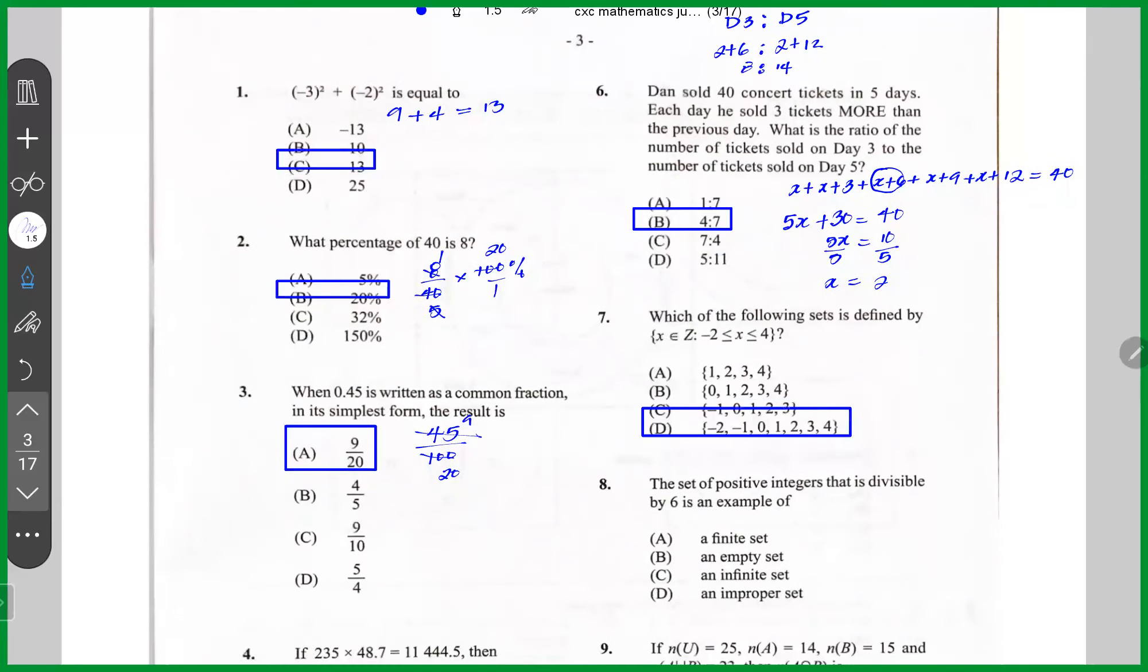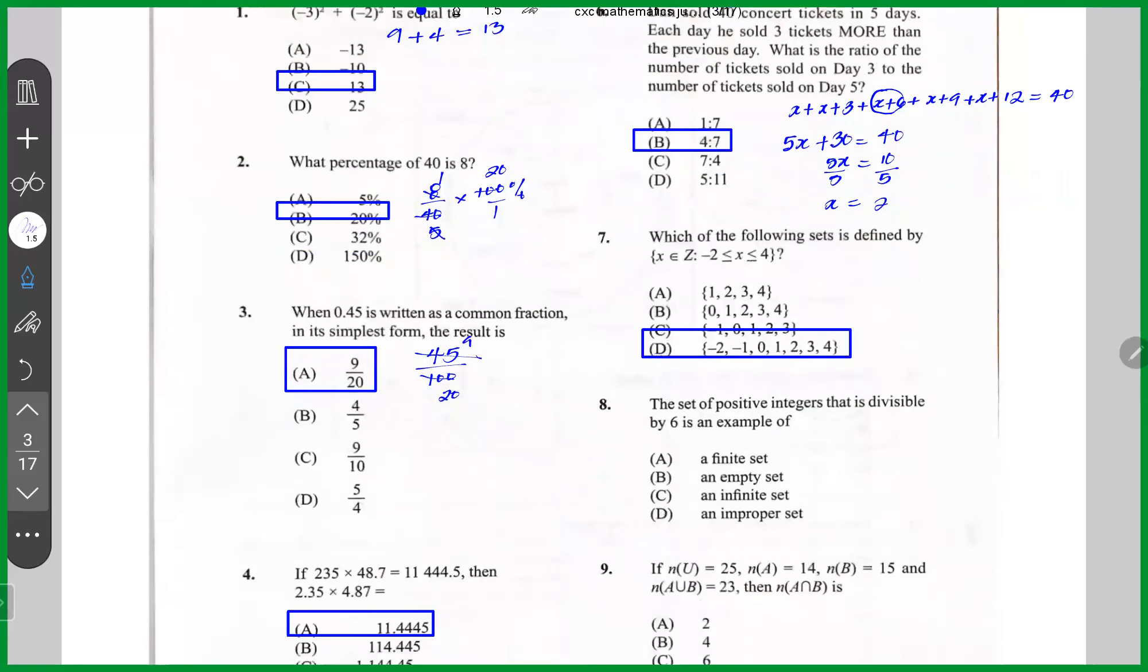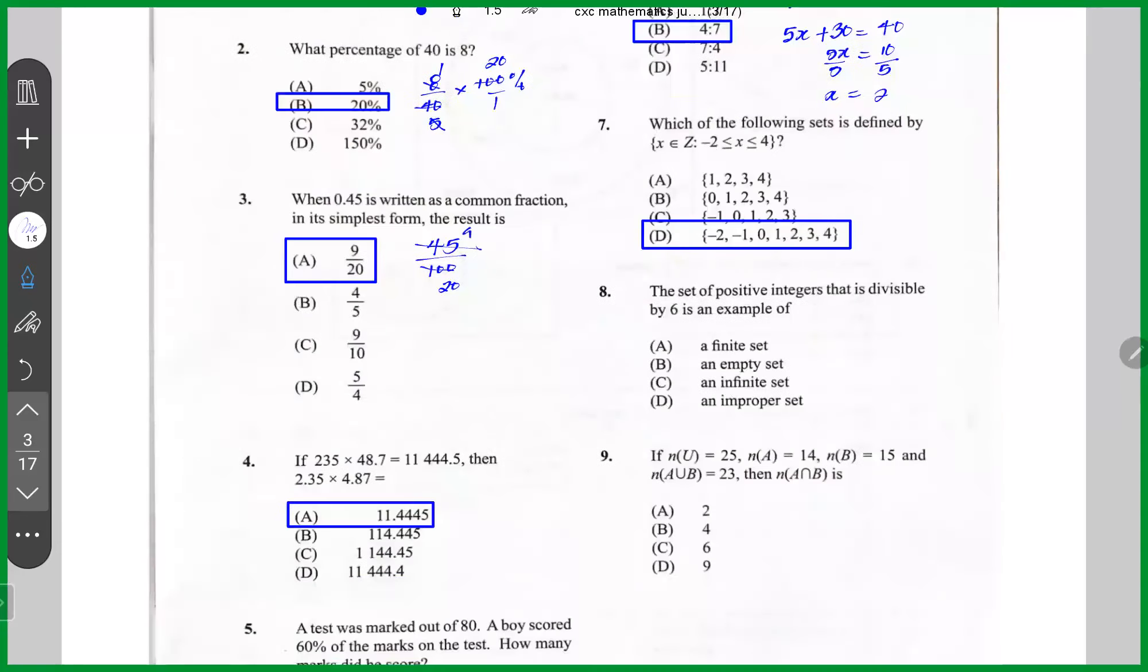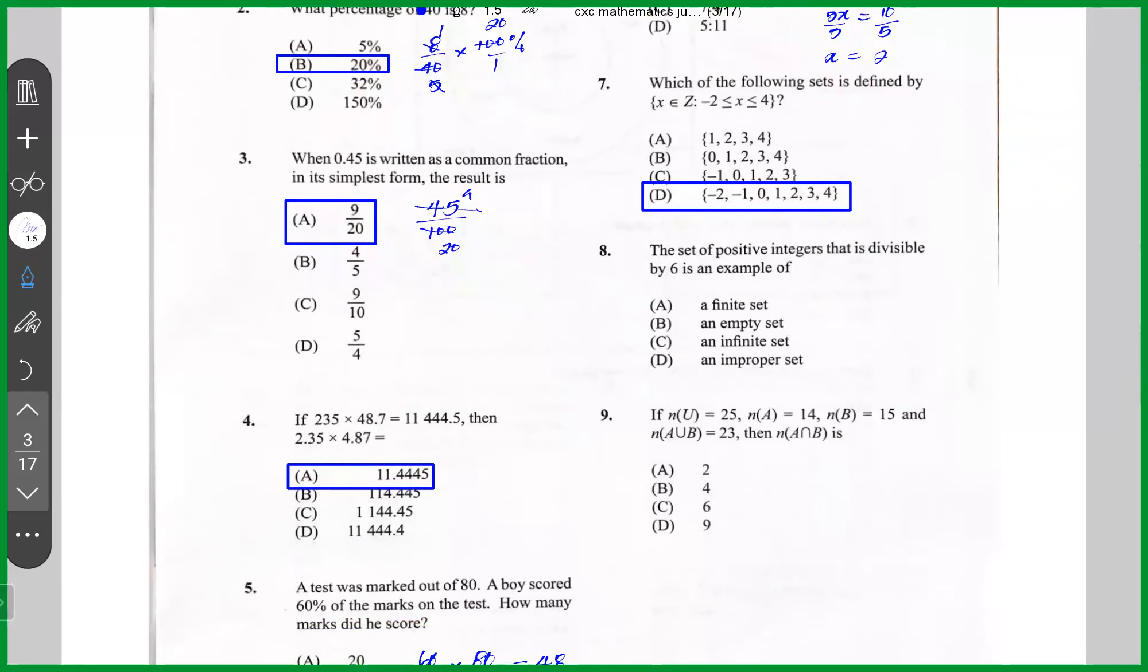Question number eight says, The set of positive integers that is divisible by six. To me, that would be, well, the set of positive integers is infinite and the set of positive integers divided by six is also infinite. So this is an infinite set.